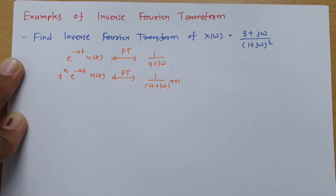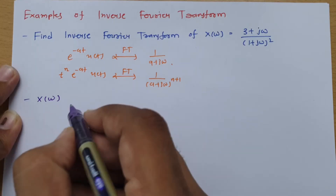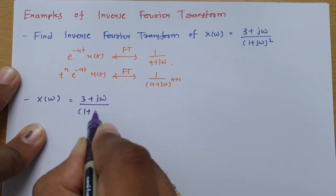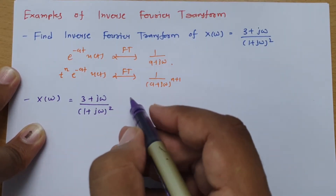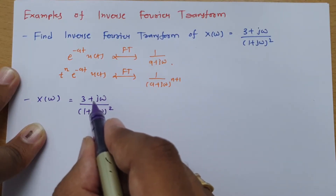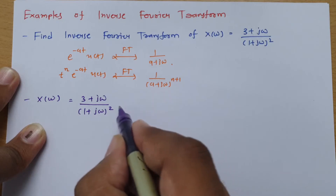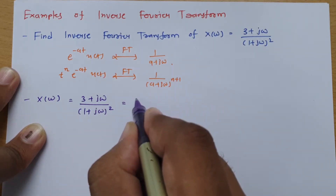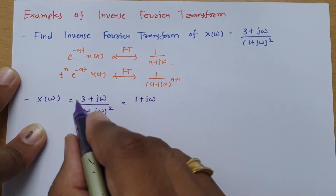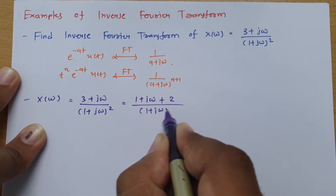Let us solve this step by step. We have X(Ω) = (3 + jΩ) / (1 + jΩ)². I can rewrite the numerator as (1 + jΩ) + 2, since 1 + 2 = 3. So this becomes (1 + jΩ + 2) / (1 + jΩ)².